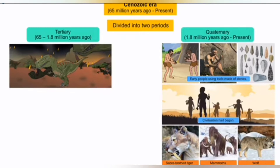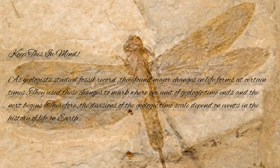Along with this, big mammals like saber-toothed tigers, mammoths, and wolves lived during this period. As geologists studied the fossil record, they found major changes in life forms at certain times. They used these changes to mark where one unit of geologic time ends and the next begins. Therefore, the divisions of the geologic time scale depend on events in the history of life on Earth.